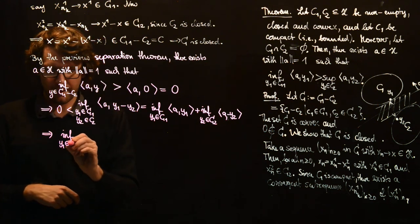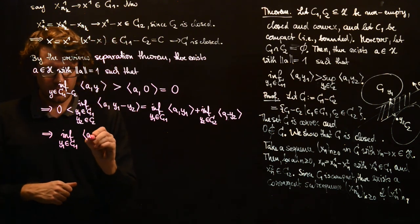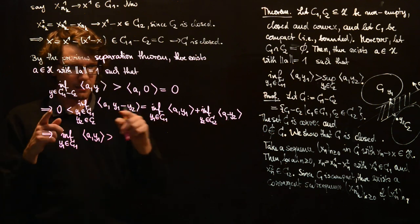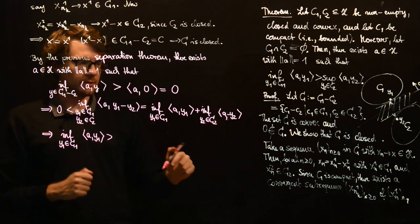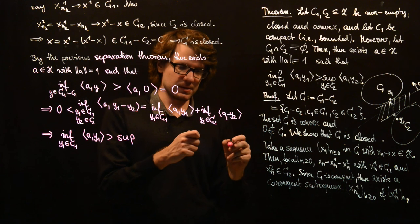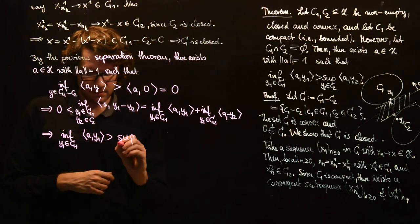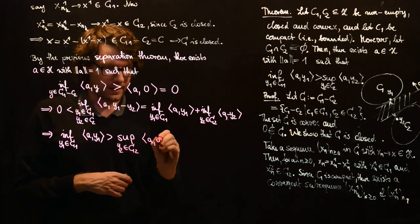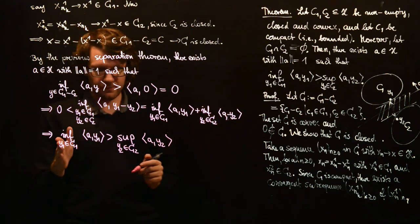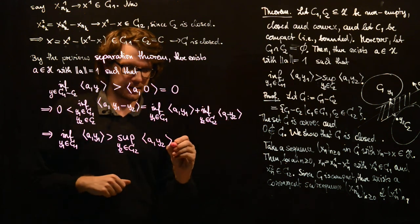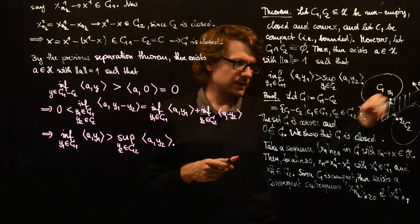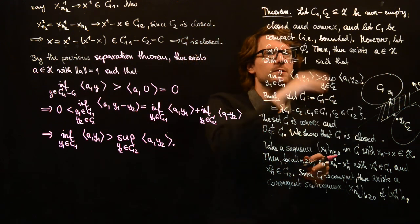So infimum over y1 in C1 of a·y1 is greater than, and now we have minus infimum over minus a·y2, which is the supremum over. Since minus the infimum of minus an expression is the supremum over the very same expression. We have supremum over y2 in C2, and here we have a·y2. Both the minuses from putting this on the other side and this minus, they cancel out. And therefore, we have this relation. And that's exactly what we wanted to prove. And we showed that there exists a strongly separating hyperplane between those two sets C1 and C2, one of which needs to be bounded.